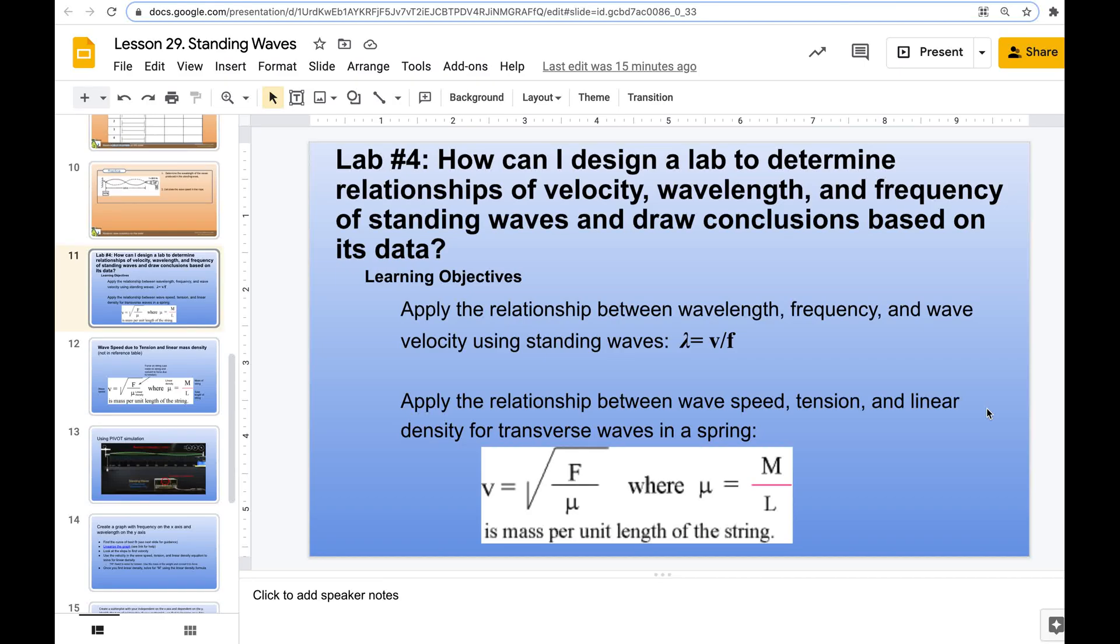So this is how we're going to do the PIVOT standing waves lab. This is from our Pear Deck notes, so I'm going to go through that and show you the PIVOT so that you can work on this more independently on your own without necessarily having me or Mr. Scott in the classroom with you. The question is: how can I design a lab to determine relationships of velocity, wavelength, and frequency of standing waves and draw conclusions based on its data?